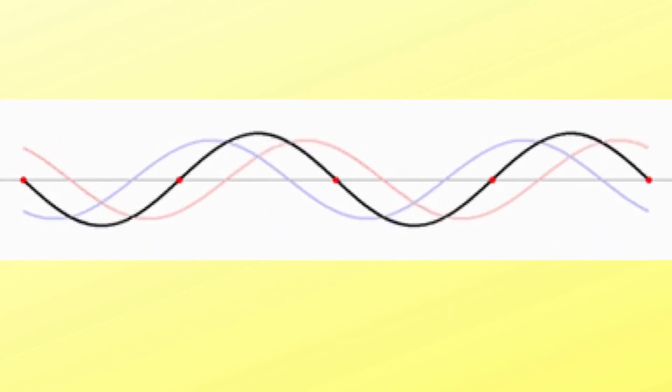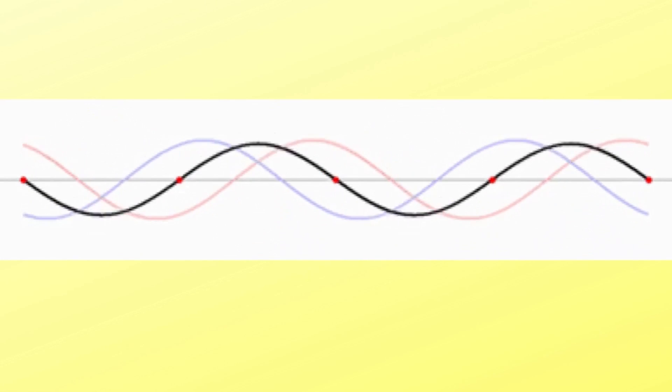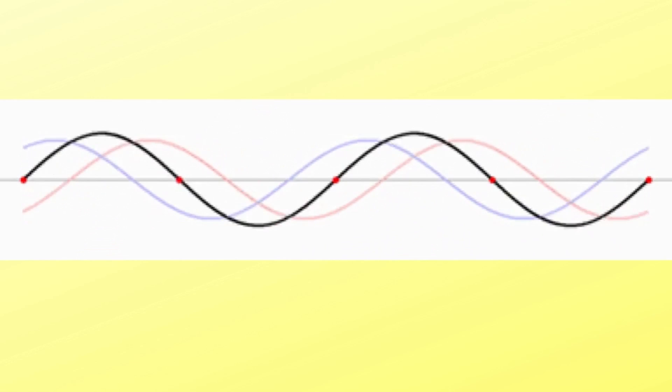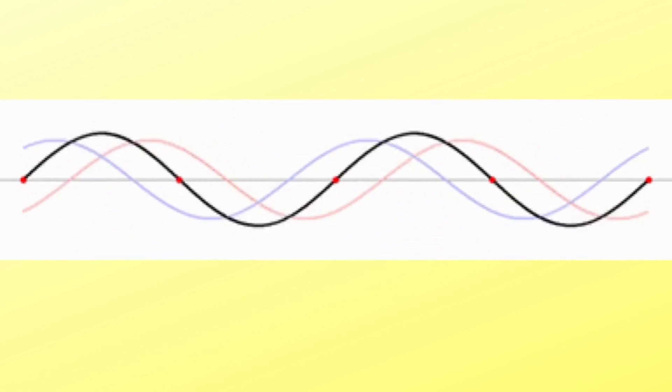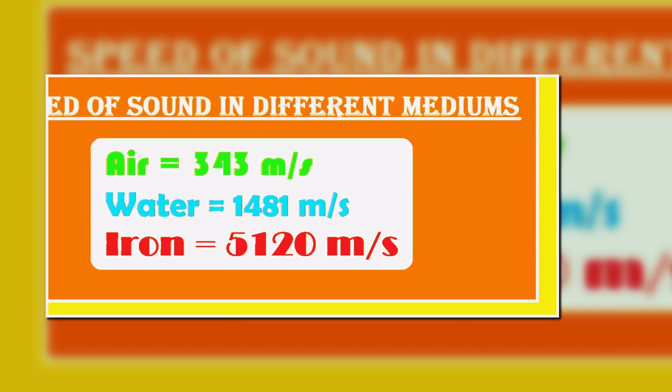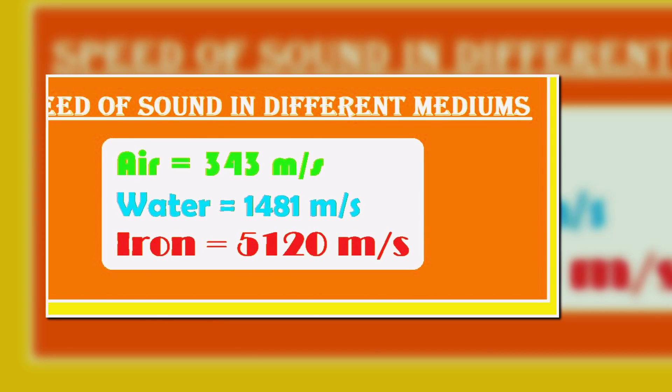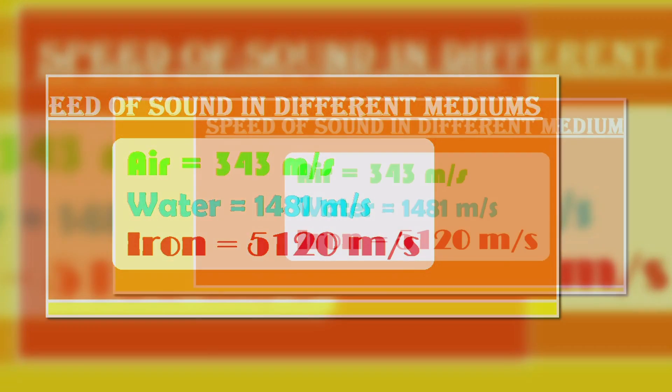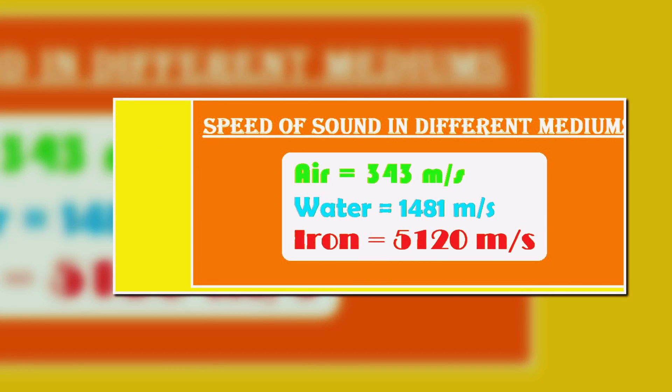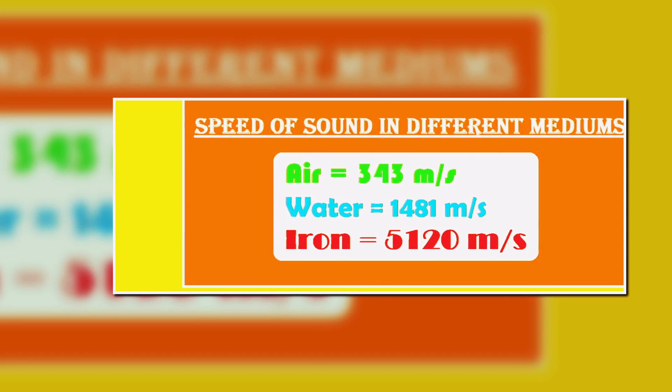However, the speed of sound is not same in every transmission medium. It depends on the properties of the medium such as its density and elasticity. For example, many of you may be surprised by the fact that the speed of sound in air is 343 meters per second, while its speed in water is around 1481 meters per second. And its speed in solid objects like iron is around 5120 meters per second, which is nearly 15 times faster than its speed in air.